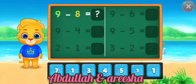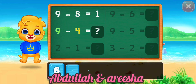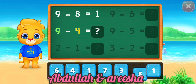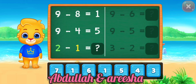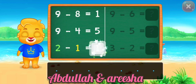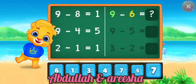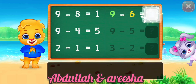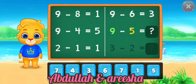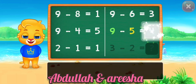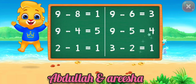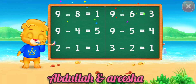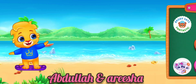9 minus 8 is equal 1. 9 minus 4 is equal 5. 2 minus 1 is equal 1. 9 minus 6 is equal 3. 9 minus 5 is equal 4. 3 minus 2 is equal 1. 1. Woohoo!